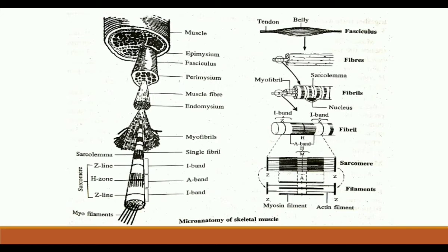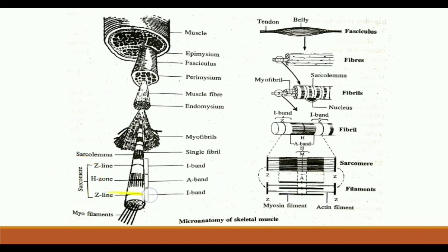Each muscle fiber is formed from a large number of cylindrical, unbranched, and longitudinal myofibrils, also known as sarcostyles. These myofibrils are formed from protein filaments called myofilaments, arranged in repeating bundles called sarcomeres. This arrangement gives the muscle fiber its banded or striated appearance. The sarcomere is the structural unit of the muscle fiber. Adjacent sarcomeres are separated by the narrow Z-zone, and the Z-lines divide the muscle fiber into a series of sarcomeres.